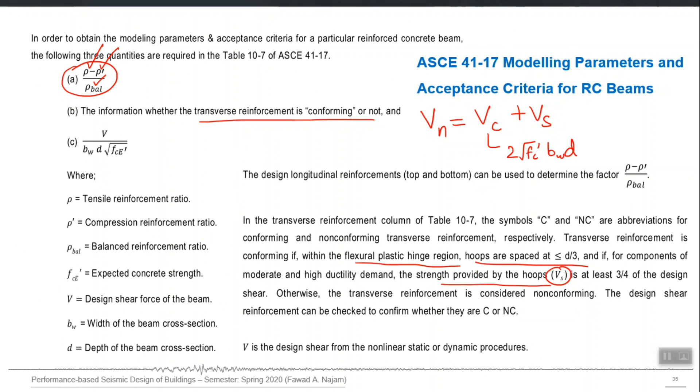You also have to check this criteria for your transverse steel. You have to calculate this first factor, you have to check your transverse steel whether it is conforming or non-conforming, and lastly you have to calculate this parameter. Bwd, the dimensions, they will be available. Fc prime is the expected strength.